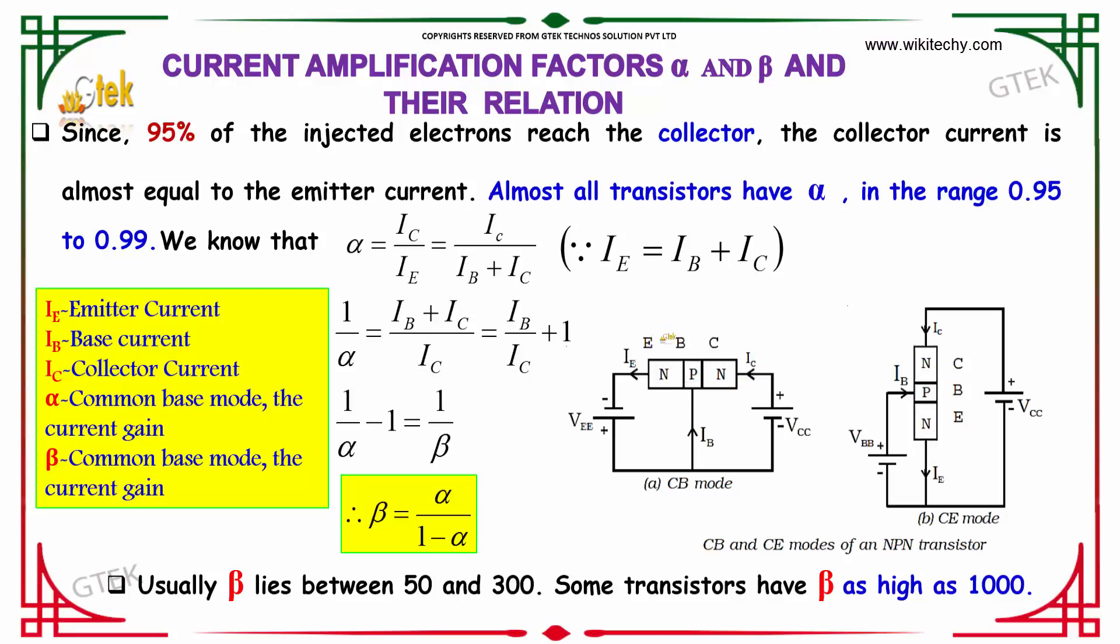Substituting i-e with i-b and i-c, you get the equation. So 1/alpha equals i-b plus i-c divided by i-c, which is nothing but i-b/i-c plus 1.